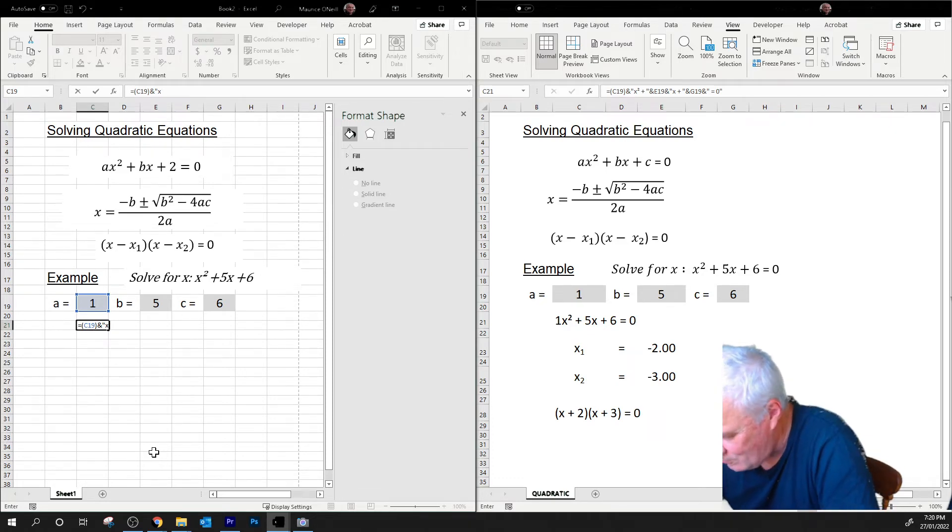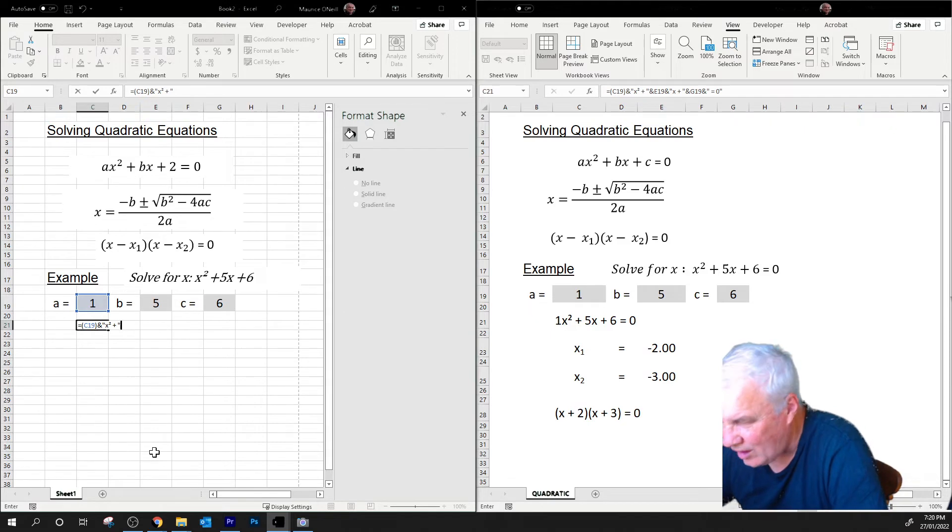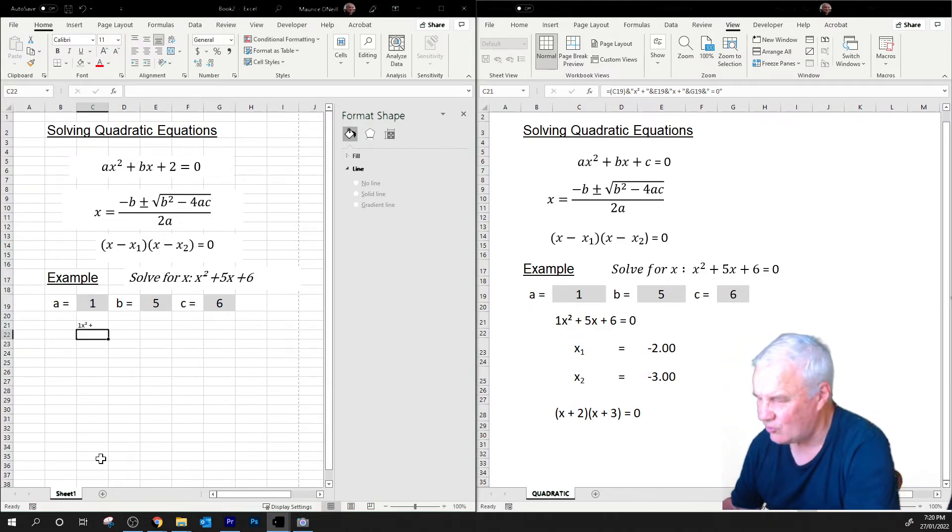Alt 253, so I hold down the alt key and then type 253 on the numbers. There's other ways you can do it as well. And then I'm going to go space, plus, and then another space, and then another quote marks. So I've done that, I'm just going to see if that's going all right, just like that. Oh yeah, 1X squared plus, well that's going good, that's good.